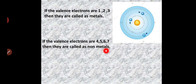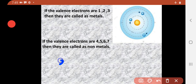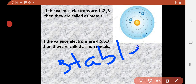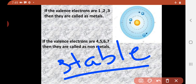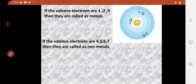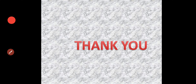We said the valency electron limit is up to 8 — we covered up to 4, 5, 6, 7. If 8 electrons are present in the last orbit, then that element is called a stable element. Thank you.